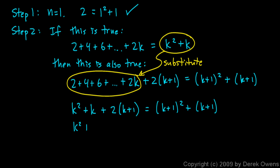So on the left, I have k squared plus k plus 2k plus 2, distributing the 2 right there.